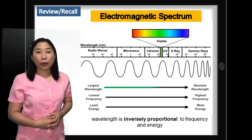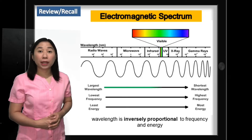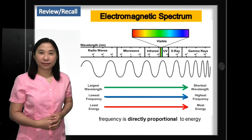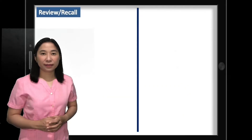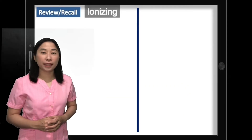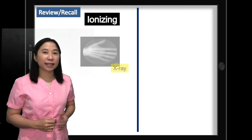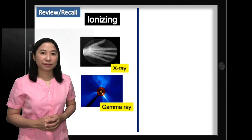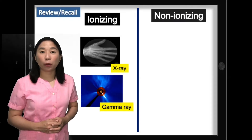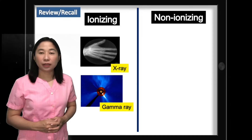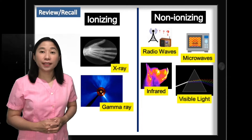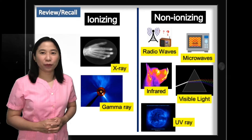Notice that as you move from left to right of the electromagnetic spectrum, the wavelength becomes shorter while frequency and energy increases. That's why EM waves with more energy can be classified as ionizing radiation — examples are x-rays and gamma rays — while EM waves with less energy are called non-ionizing radiation, like radio waves, microwaves, infrared, visible light, and ultraviolet rays.